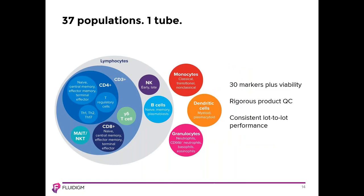The Maxpar Direct Immune Profiling Assay identifies 37 populations for each sample. These 37 populations span the major immune cell populations found in PBMCs, including lymphocytes, monocytes, and dendritic cells. When using whole blood, granulocyte populations can also be identified. The assay's reagents are subjected to rigorous product QC, thus ensuring consistent lot-to-lot performance.